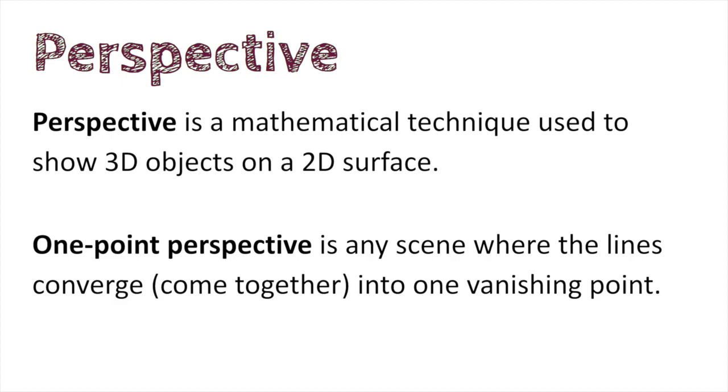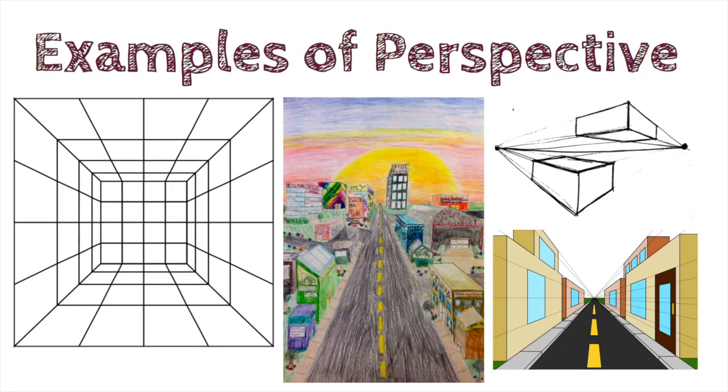Perspective is a mathematical technique used to show 3D objects on a 2D surface. One-point perspective is any scene where the lines converge or come together into one vanishing point. If you look closely, you can see that many of the lines come together into one point in the city drawings. It's found on the horizon line, which is where the sky meets the earth. The drawing on the top right is a little bit unique because there are two points and you can see both sides of the boxes.